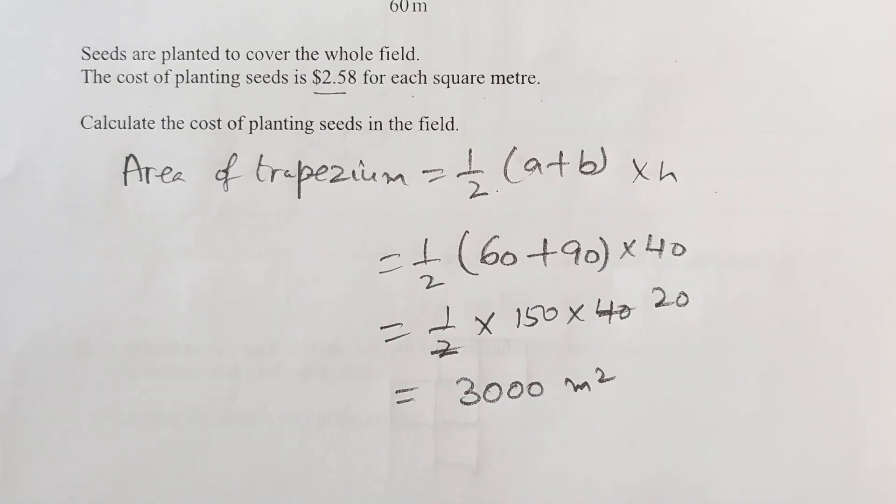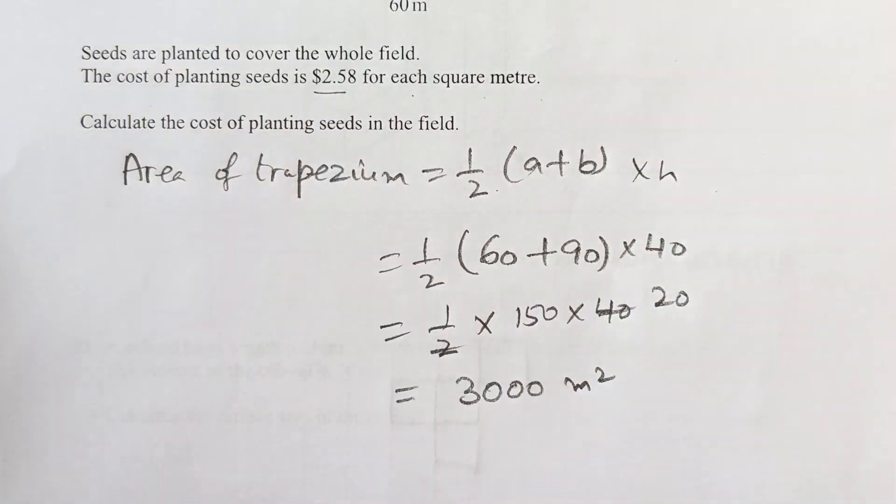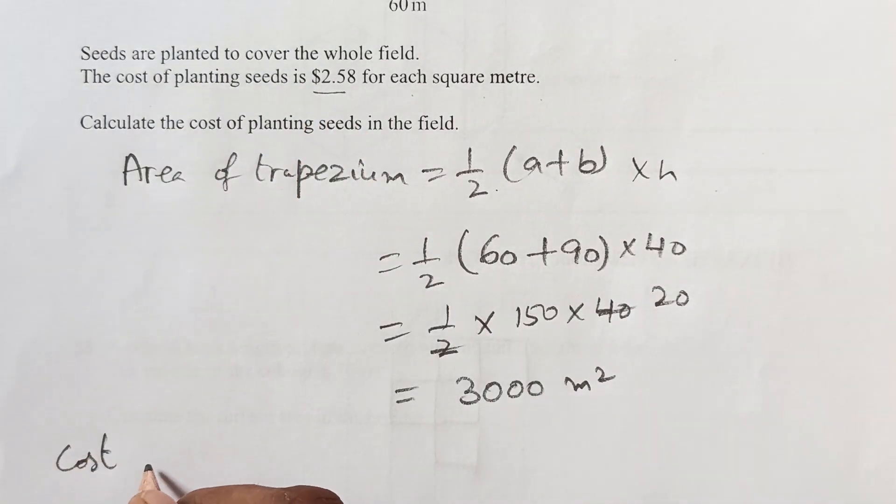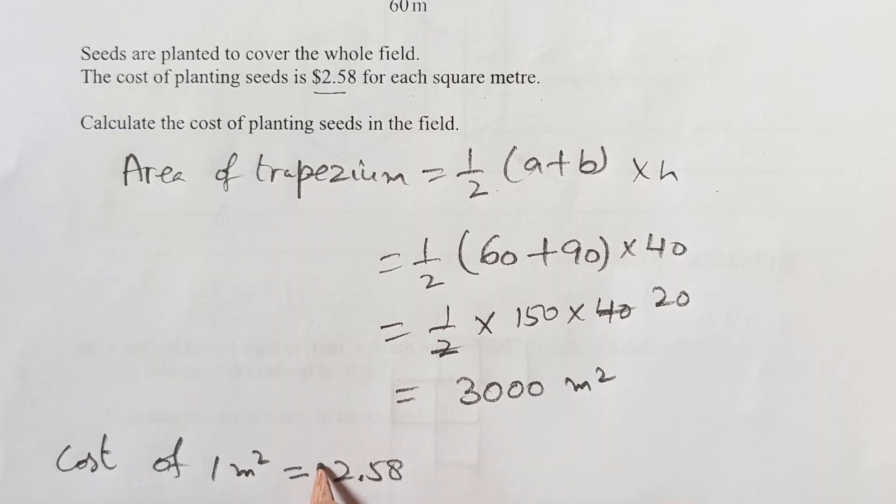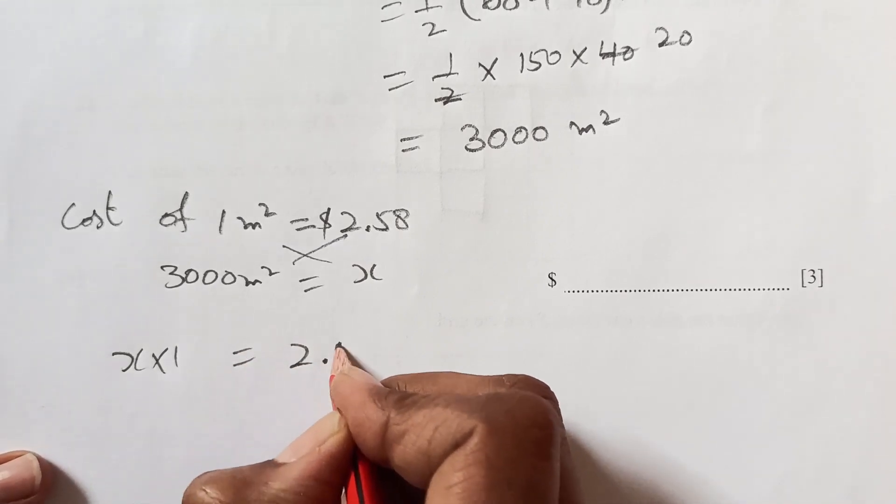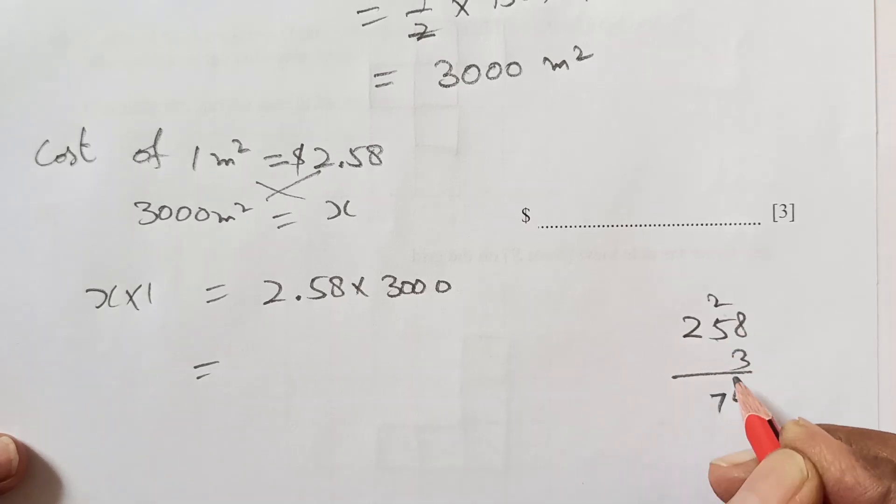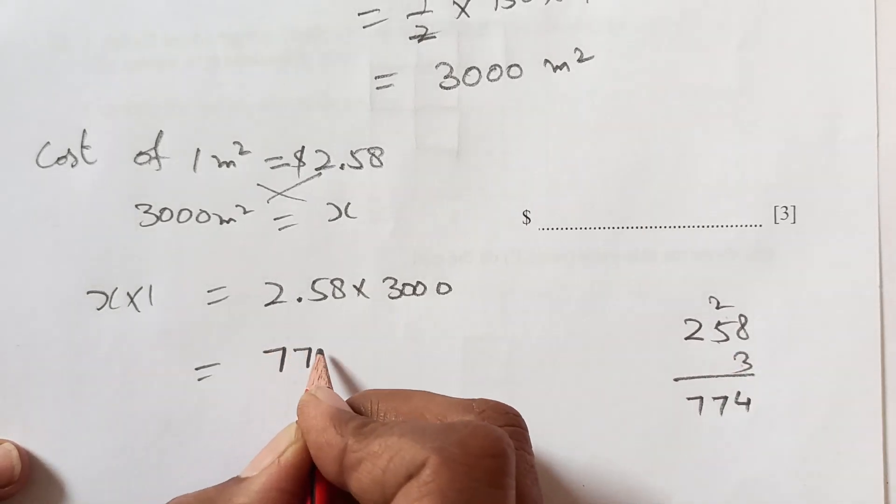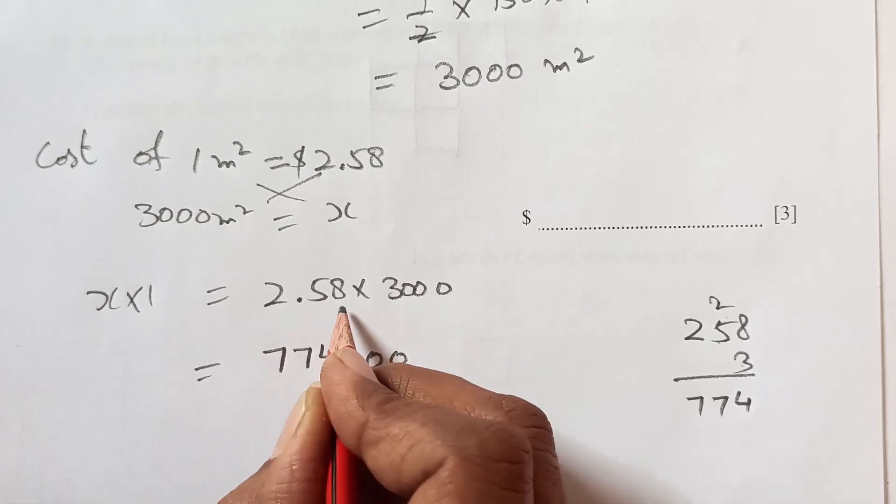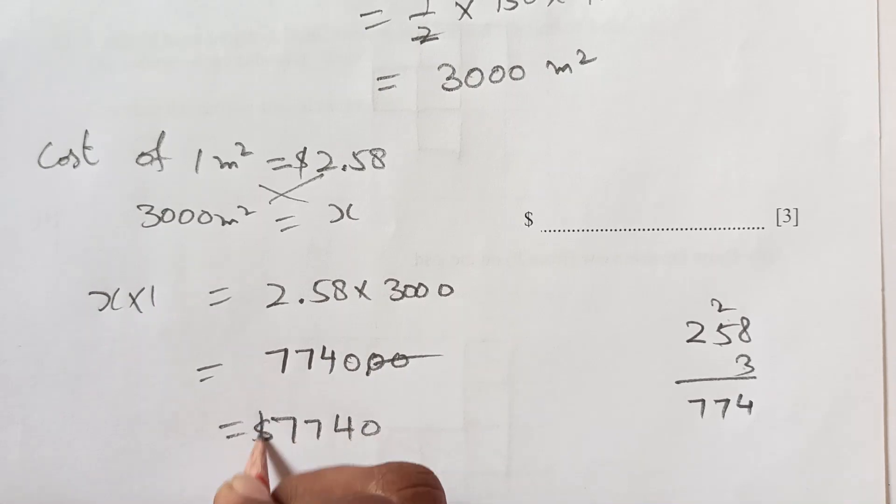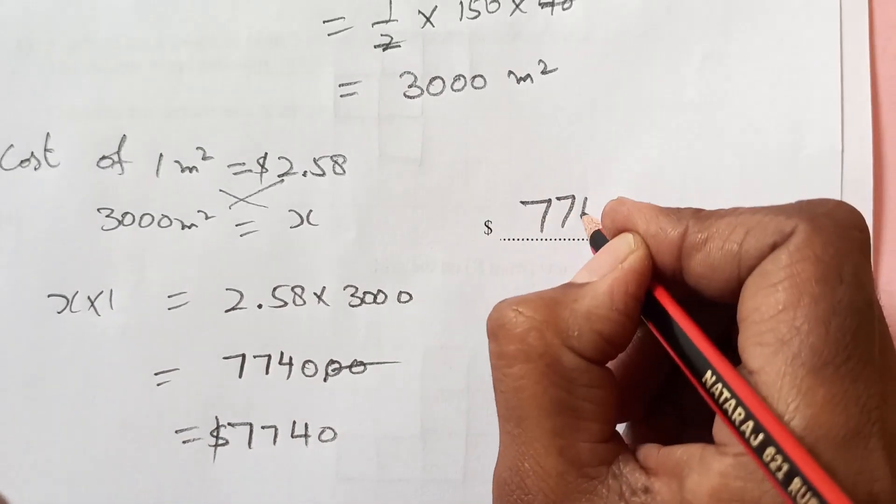Now we are looking for the cost. The cost of one meter square is 2.58 dollars. And cost of 3000 meters squared will be how much? We will just cross multiply. So x times 1 is going to be 2.58 times 3000. Let's multiply 2.58 by 3. 24, 5 times 3, 15 plus 2, 7. 2, 6, 7. Then there are 3 zeros: 1, 2, 3. There are 2 decimal places. So you will have 7740 dollars. This is the final answer.